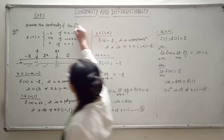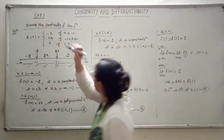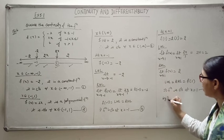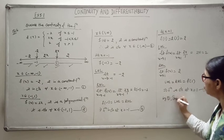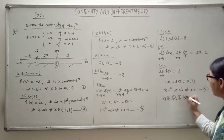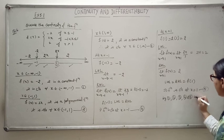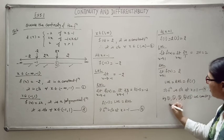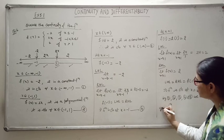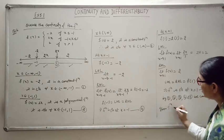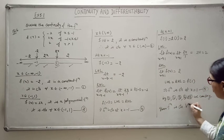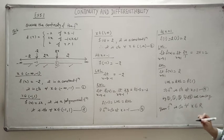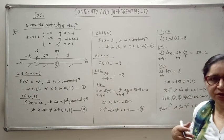By results 1, 2, 3, 4, and 5 we can say the given function is continuous for all x belonging to real numbers.